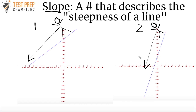Each of these lines is going to have its own slope, and they're going to have a different slope. This is what I mean when I say that the slope is just a number that describes the steepness of a line. That's the basic concept of slope.